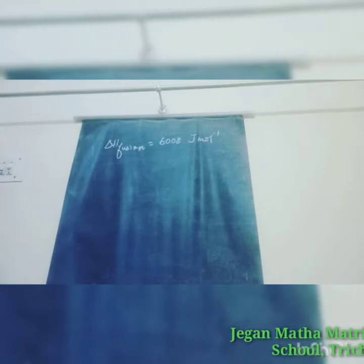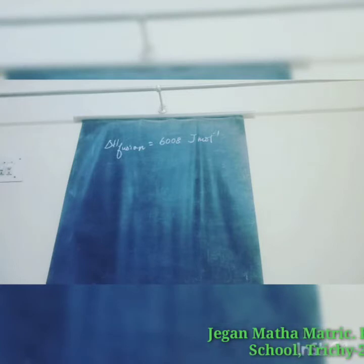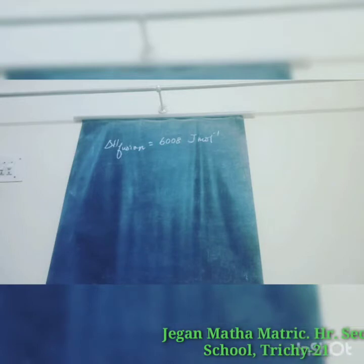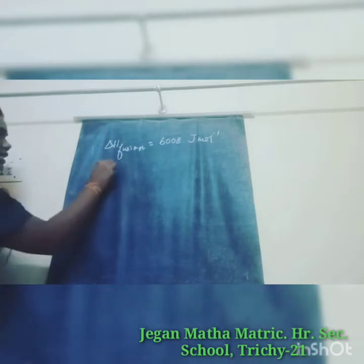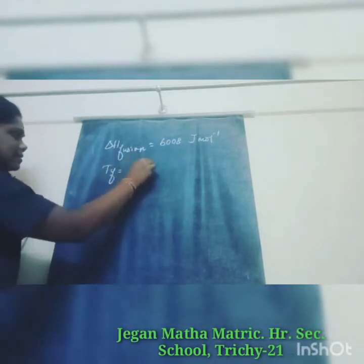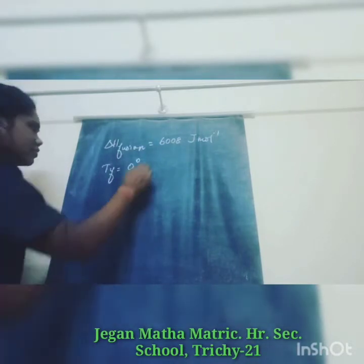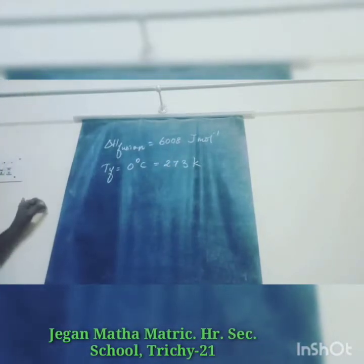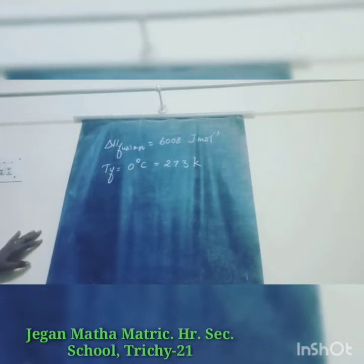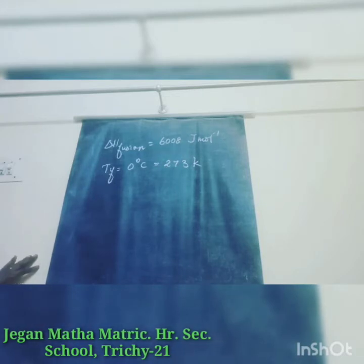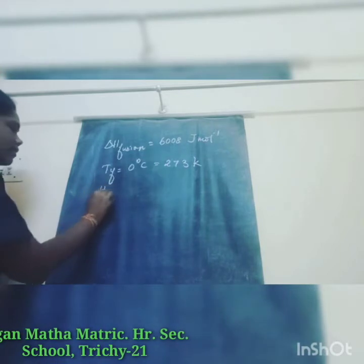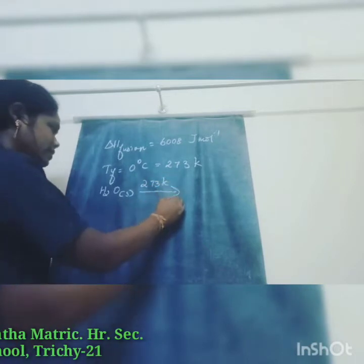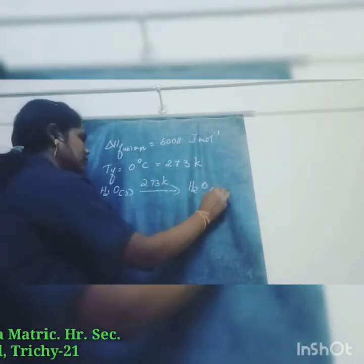The problem asks to calculate the entropy change during the melting of 1 mole of ice into water at 0 degree Celsius and 1 atmospheric pressure. So Tf is equal to 0 degree Celsius, which converts to 273 Kelvin. Water is present in solid state at 273 Kelvin and is converted into liquid state.